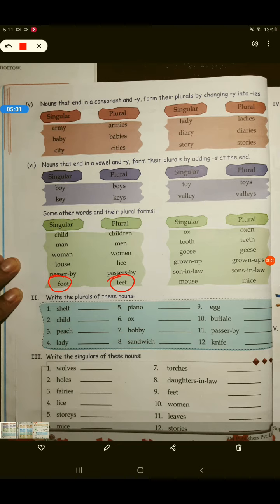Foot, feet. Ox, oxen. Tooth, teeth. Goose, geese. See, double O is changing into double E. In feet, teeth and geese, double O has changed to double E. Grown up, grown ups. Son in law, sons in law. Mouse, mice. So, children, you will have to learn these things.